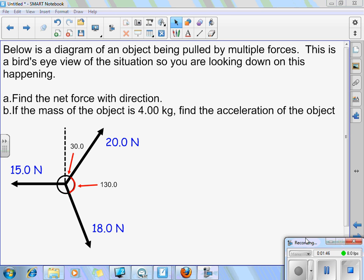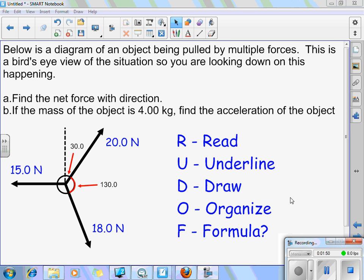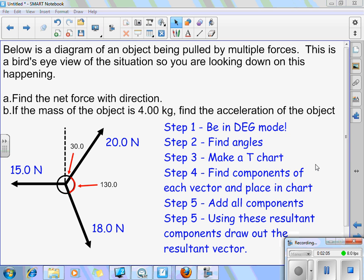As with everything else, there's always the few steps. The whole idea of Rudolph, where we read the problem, underline the details, draw out a picture if necessary, this one's provided so we don't have to do that, and then organize our data and do the formula. Well, here are the steps. The first step is to be in degrees mode. The next one is to find the angles. Then we're supposed to make a t-chart. Following that, we're going to put the components of each vector in the t-chart. Then we're going to add all these components, and then use the resulting components to draw out the resulting vector. I realize that's a lot of steps. You can shorten this into less steps if you wish.